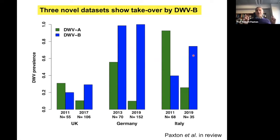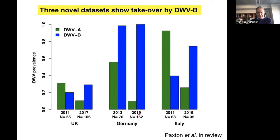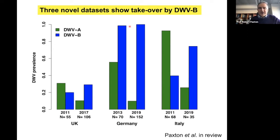In Germany, a couple of hundred colonies screened by the German reference laboratory — Mark Schaefer very kindly screened them — show almost all had DWVB. These are actually all collapsing colonies, so it's a really prevalent and dangerous virus. Let's get back then to spillover among bees.